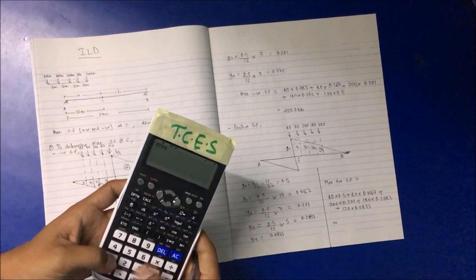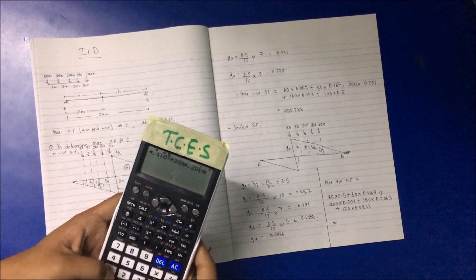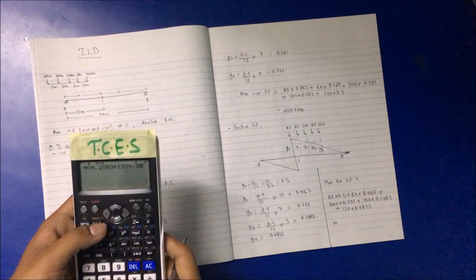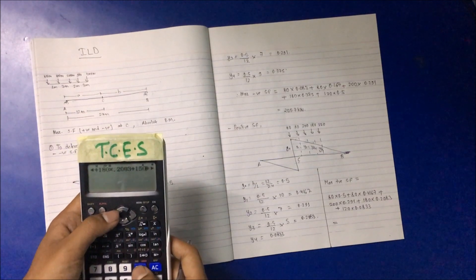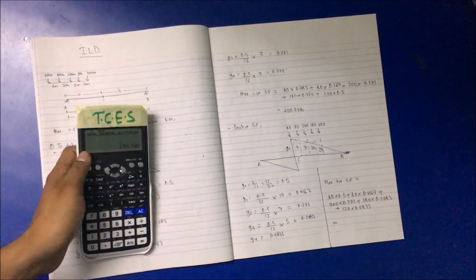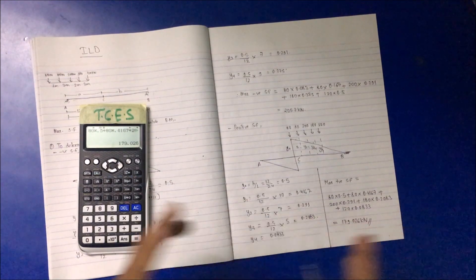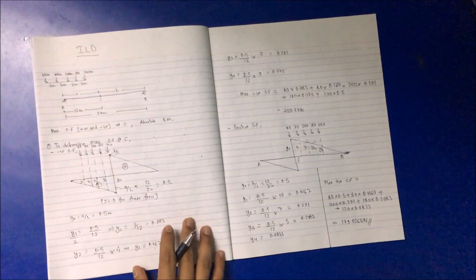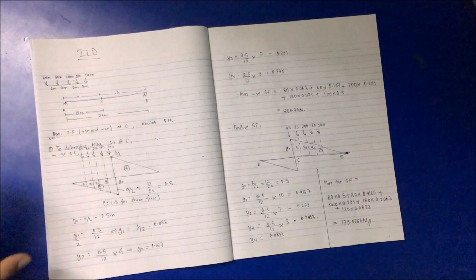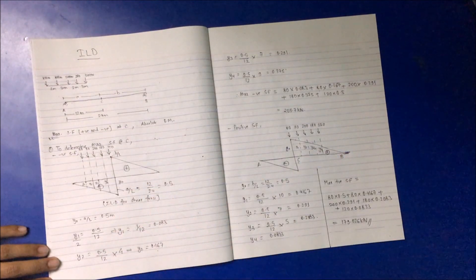Calculating this gives 179.026 kN, which is the maximum positive shear force. So the first part of this question is solved — maximum shear force, both positive and negative at C. Negative shear force is 205.7 kN and positive shear force is 179.026 kN.